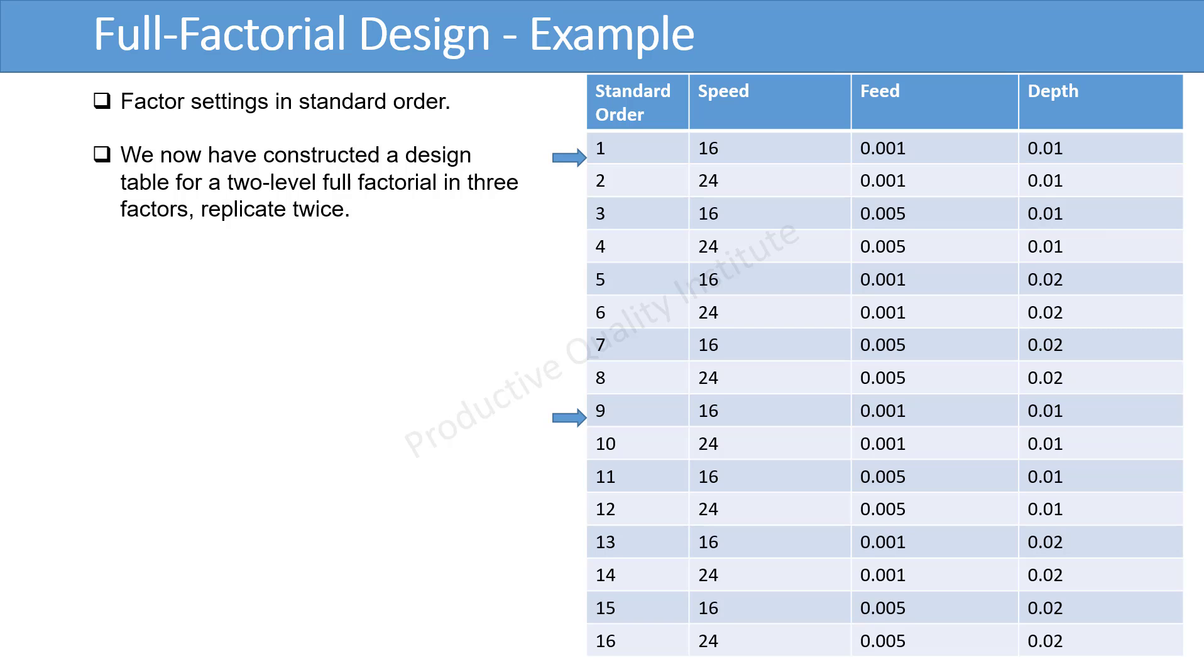Until now, factor settings are in standard order with only one repetition. However, it is better to construct design table for 2 level full factorial in 3 factors replicate twice. Then, we will have 16 experiments as shown in the table. The standard block, which is from 1 to 8, has been replicated, so we have another block from 9 to 16.